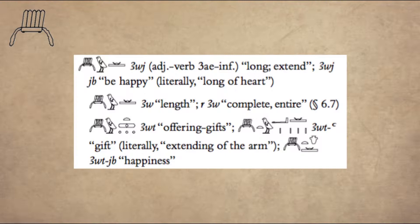So the first hieroglyphic, ao, it's used in the beginning of the word awi, which means long. Awi-yib, it means long heart, literally, and it's a metaphor for being happy. Awi-yib.